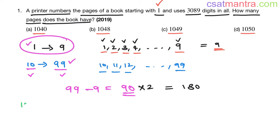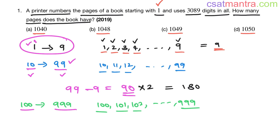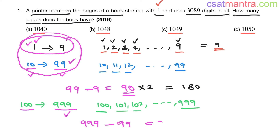Now page number 100 to 999 — every page has three digits. From 1 to 999 there are 999 pages; subtract the 99 pages already counted, so you have 900 pages. On every page you have three digits, giving 2700 digits.